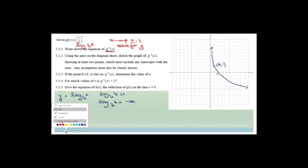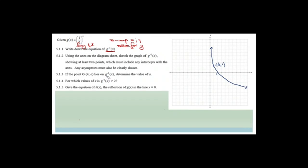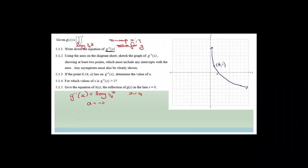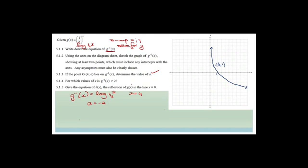If point G(4, A) lies on g⁻¹(x), determine the value of A. We've already shown that when x = 4, y = −2. Therefore A = −2.